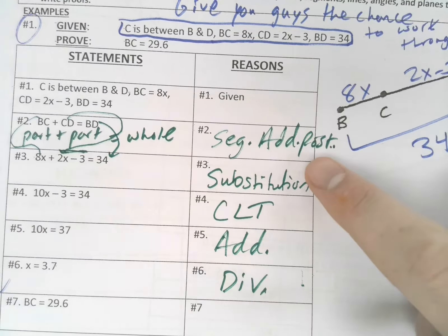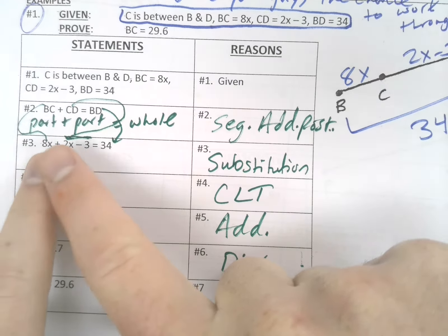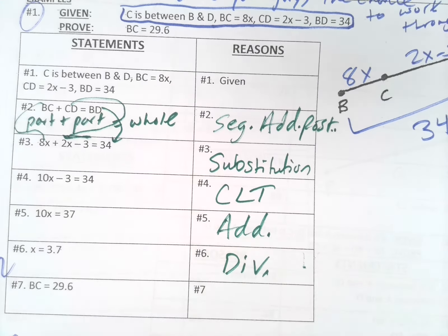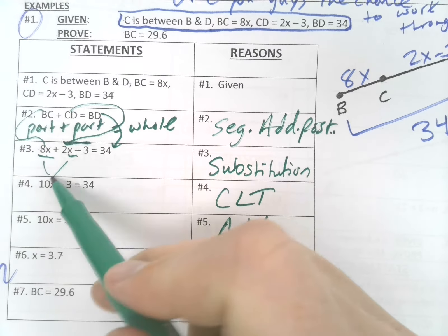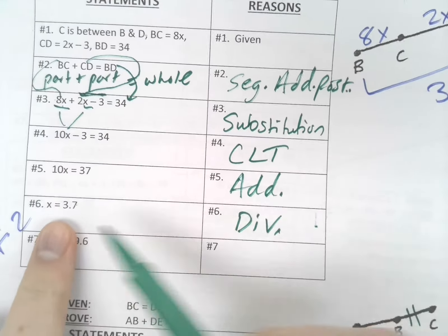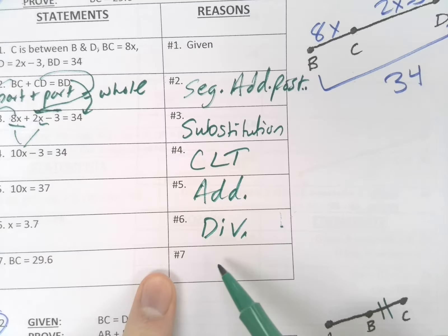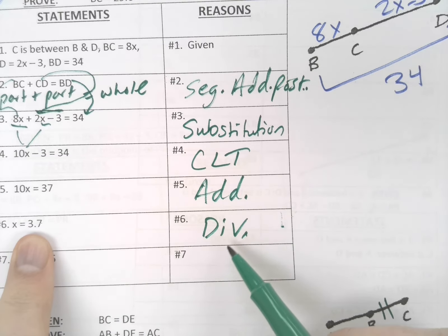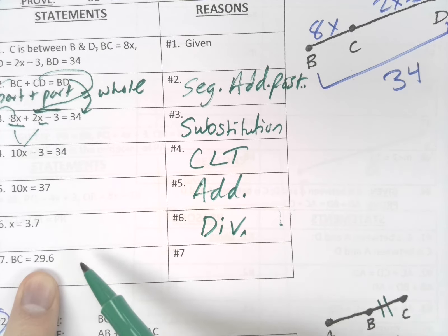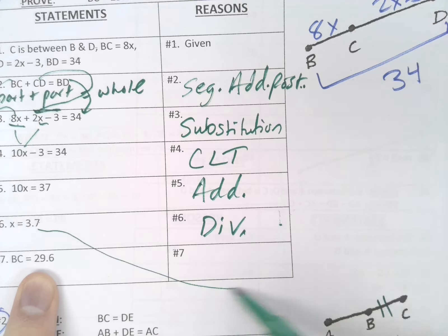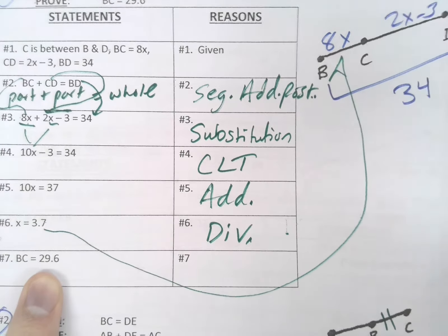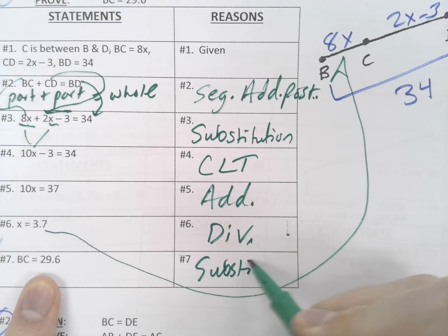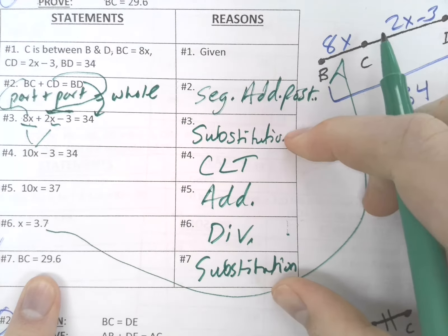So let's look at number one here, guys. Part plus part equals whole, seg add post. Then we can replace each of these three segments with their actual values for substitution. Combine like terms - 8x and 2x gives you 10x, that's CLT. Then we add 3 over, divide by 10.